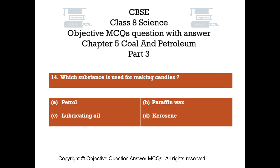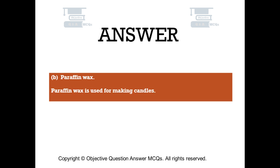Question number 14. Which substance is used for making candles? Option A: Petrol. Option B: Paraffin wax. Option C: Lubricating oil. Option D: Kerosene. The right answer is Option B, Paraffin wax. Paraffin wax is used for making candles.